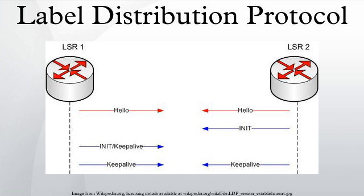Targeted LDP sessions are different because during the discovery phase, hellos are unicast to the LDP peer rather than using multicast. A consequence of this is that TLDP can be set up between non-directly connected peers, whereas non-targeted LDP peers must be on the same subnet. TLDP may still be used between connected peers if desired.